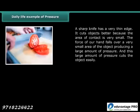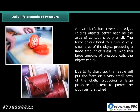A sharp knife has a very thin edge. It cuts objects better because the area of contact is very small — the force of our hand falls over a very small area of the object, producing a large amount of pressure, and this large pressure cuts the object easily. Similarly, due to its sharp tip the needle puts force on a very small area of the cloth, producing a large pressure sufficient to pierce the cloth being stitched.